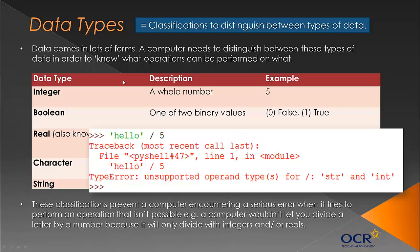Here I've got an example where I'm dividing an integer by a string, and clearly we get an error. Looking at it from a computer science perspective, we analyse what this is saying. It's got an unsupported operand type - in the instruction video we looked at operands and operators. The operand is the data part of an instruction, so it's got an issue with the data given to it. It doesn't mind the divide operator, but it doesn't like the operands - the data. Clearly it doesn't like dividing an integer by a string, which would cause a serious error.